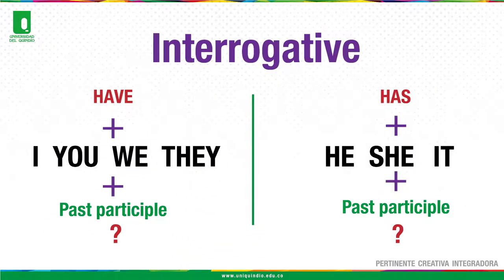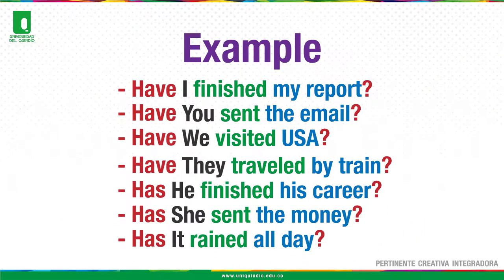Interrogative structure: Auxiliary have, plus subjects I, you, we, they, plus past participle and question mark. Third person: auxiliary has, plus he, she, or it, plus past participle and question mark. Examples: Have I finished my report? Have you sent the email? Have we visited USA? Have they traveled by train? Has he finished his career? Has she sent the money? Has it rained all day?